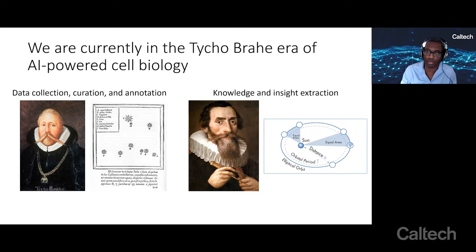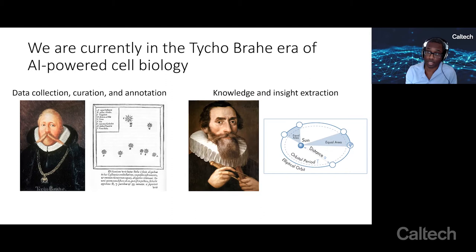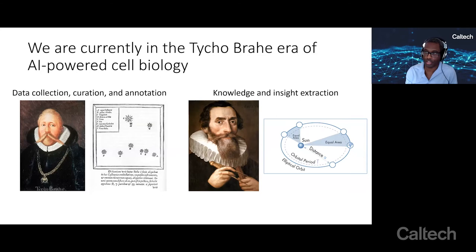Right now, we're living in what I like to call the Tycho Brahe era of AI-powered biology. Johannes Kepler is a famed astronomer — everyone learns about his laws of planetary motion. What's less appreciated are the contributions of Kepler's mentor, Tycho Brahe. Tycho Brahe was also a student astronomer, and what he did was collect and keep meticulous notes on the locations and trajectories of the planets and stars, compiled over decades.